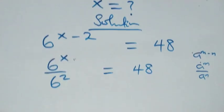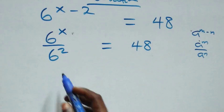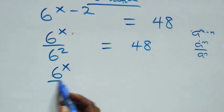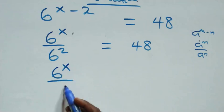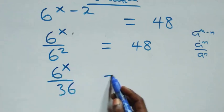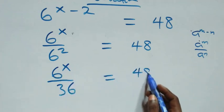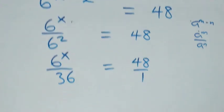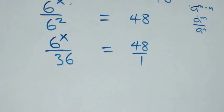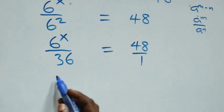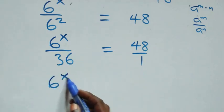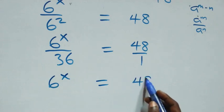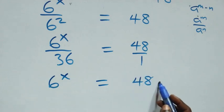This is the same thing as six raised to power x over thirty-six equals forty-eight. Now when we cross multiply, six raised to power x times one — which is just six raised to power x — equals forty-eight times thirty-six.